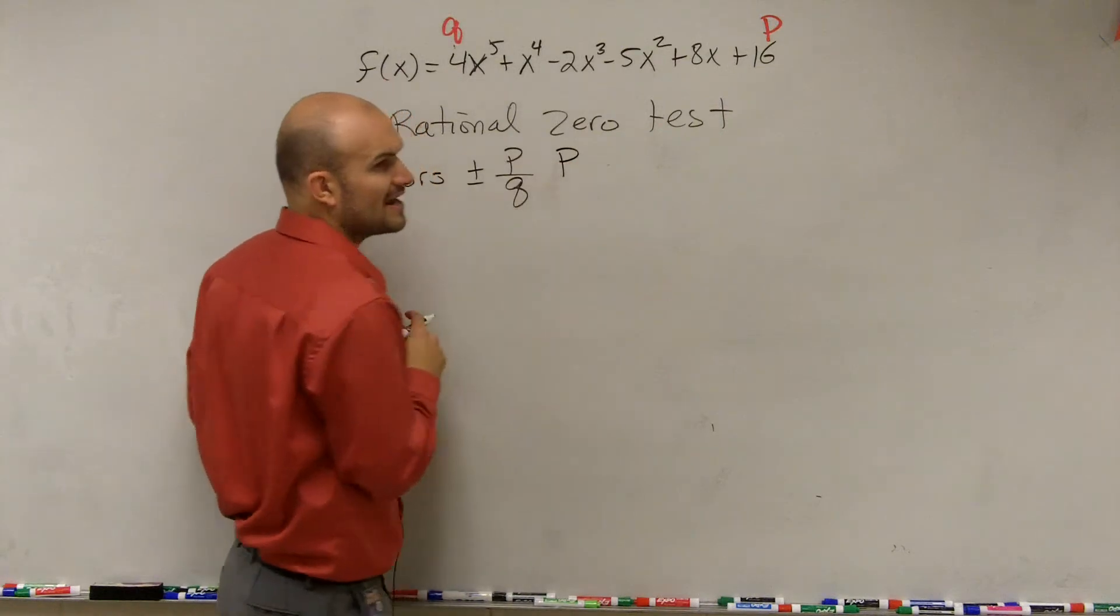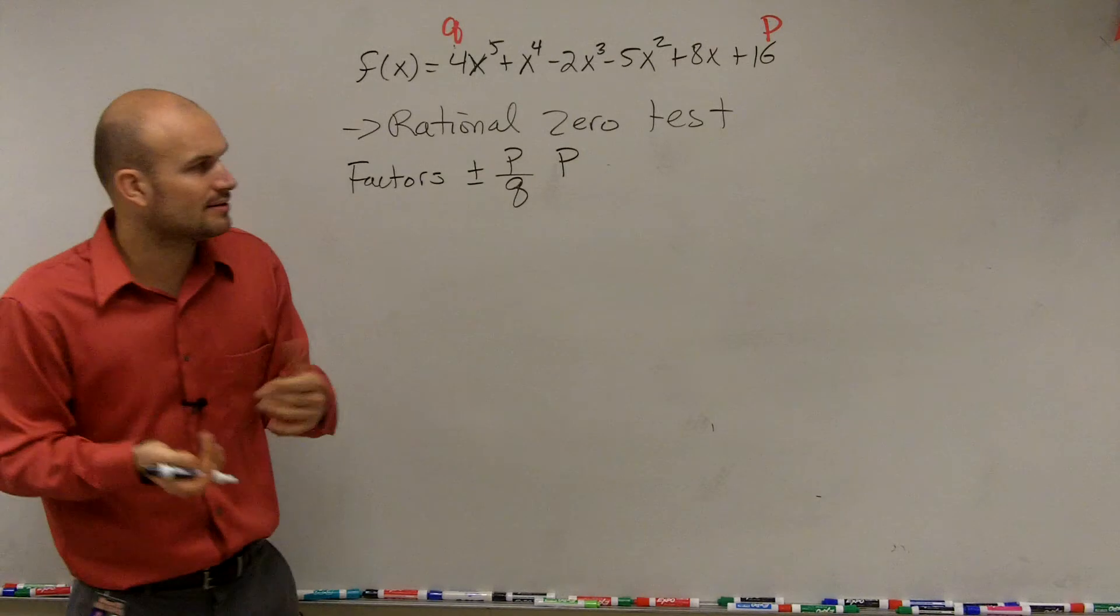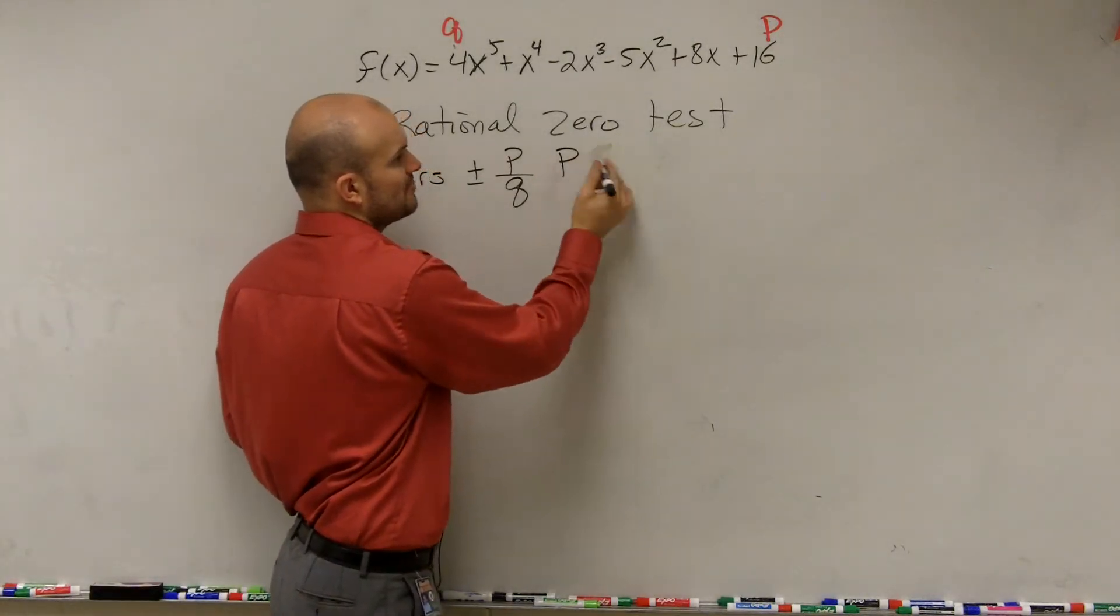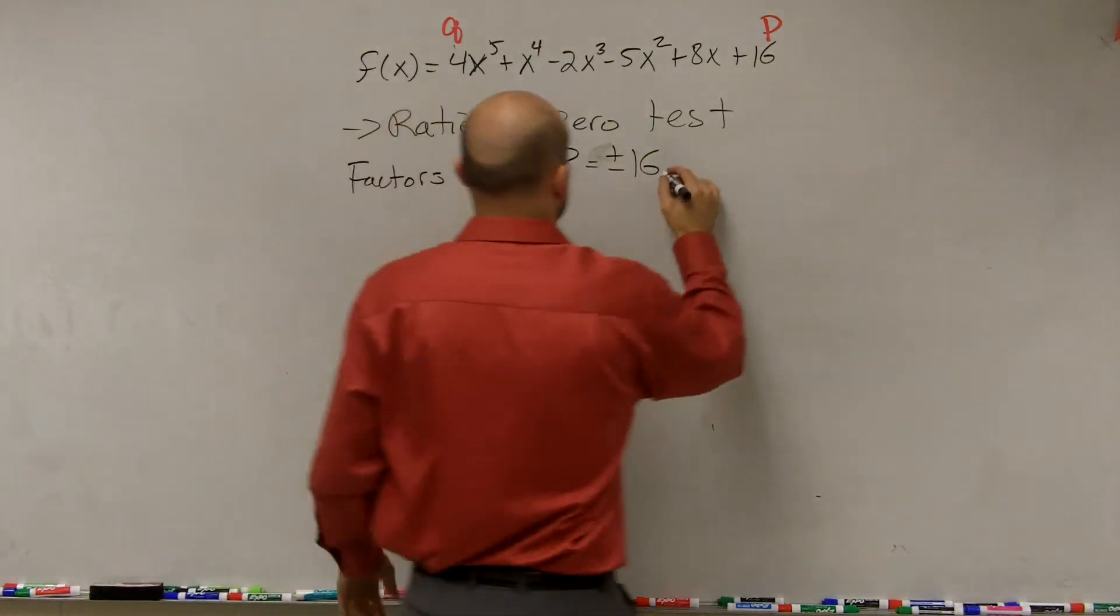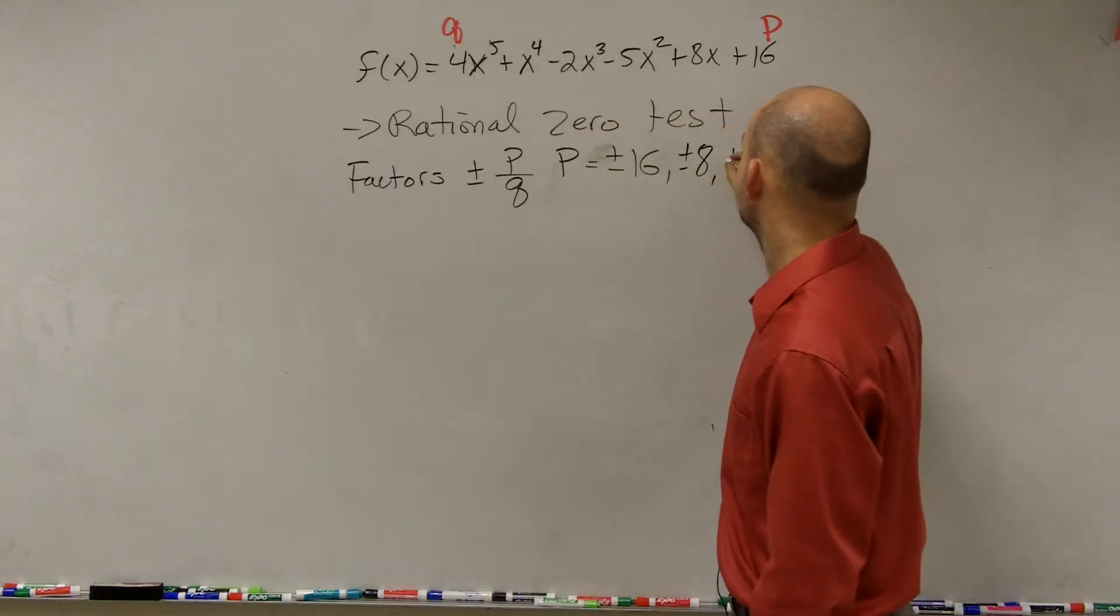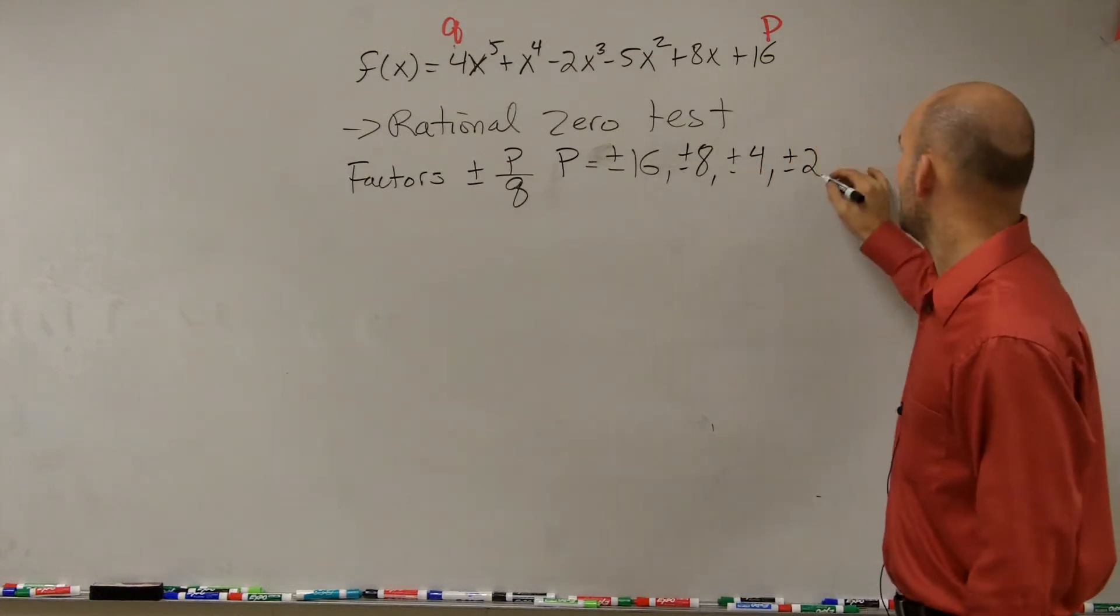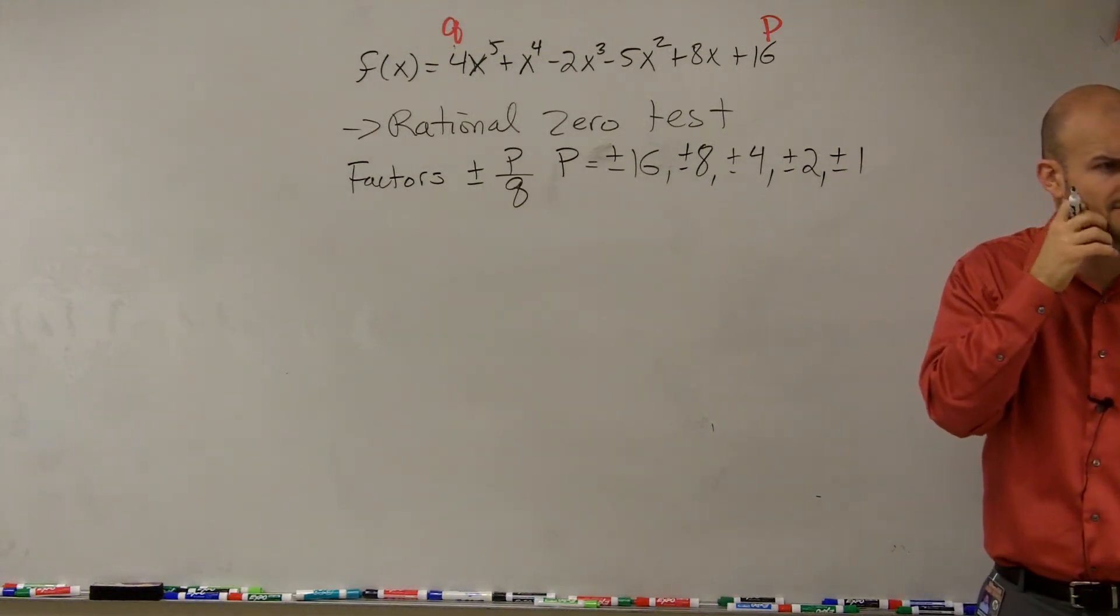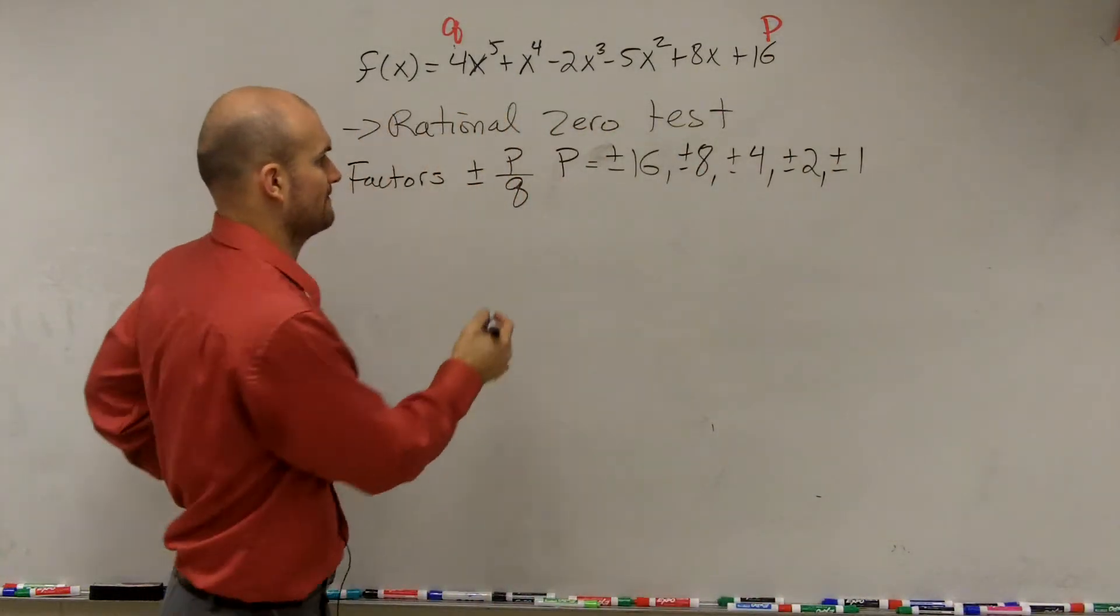Let's figure out what p is, all the factors of p. So we got up to 16. You guys can do the factor tree if you need to. But hopefully we can kind of go through it. So the factors of p are equal to, let's go from largest to smallest: plus or minus 16, plus or minus 8, plus or minus 4, plus or minus 2, and plus or minus 1. Does everybody agree with me? Those are all the factors, plus or minus of them?